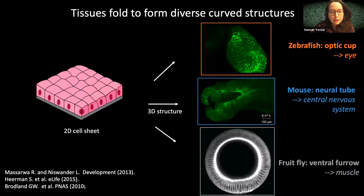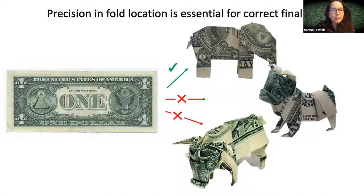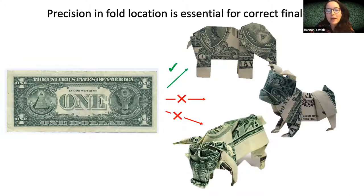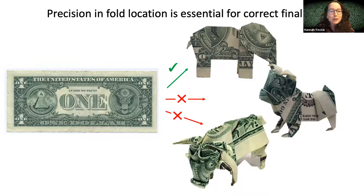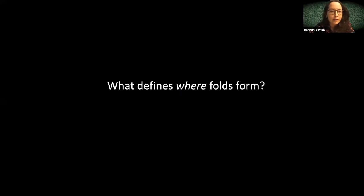What's important when tissues fold is not just that they can fold, but that there's high spatial and temporal control of where folds form during development to achieve a target shape. This is illustrated with the folding of a dollar bill — it's important that we position and time our folds correctly during the origami steps if we're trying to build a folded elephant, to avoid accidentally finding ourselves with an origami pig. So similarly during development, the question is: what actually defines where folds form? In other words, how do cells know where they are and what they should do?